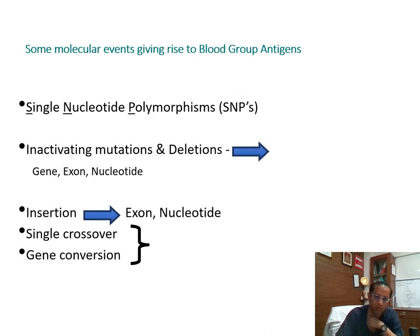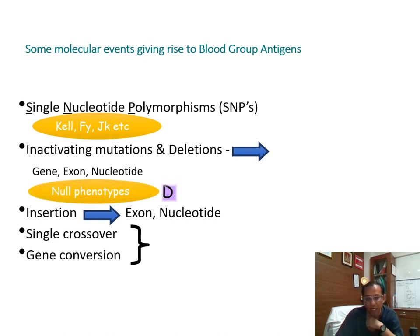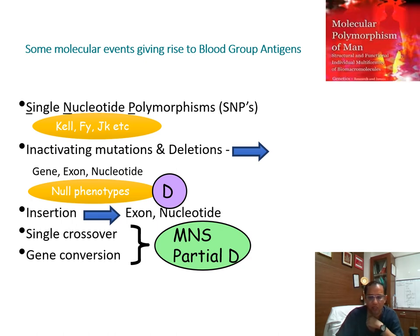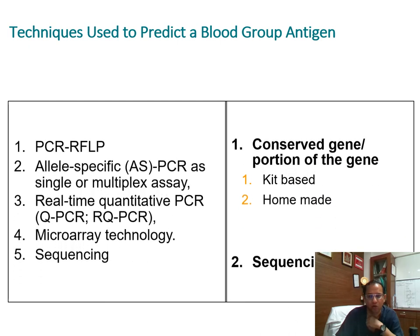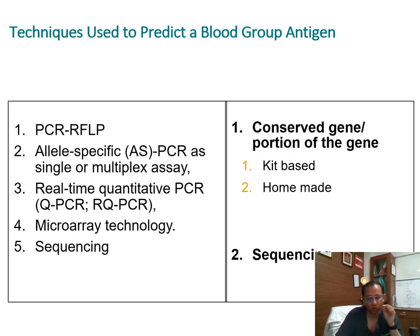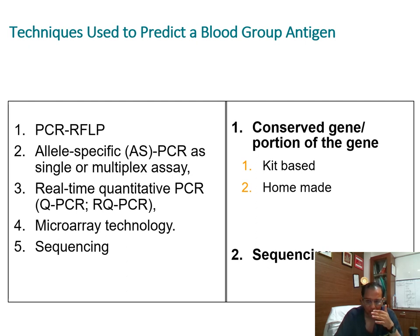The molecular events giving rise to blood group antigens include: single nucleotide polymorphisms, responsible for blood groups like Kell, Duffy, and Kidd; inactivating mutations and deletions giving rise to null phenotypes, especially in RhD; insertions in exons or nucleotides; and single crossover or gene conversion, as in MNS and partial D. To predict a blood group antigen, you identify where the SNP is in the conserved region of the gene. This can be done kit-based, running a PCR, or through a homebrew method where labs design their own primers to locate the conserved gene.